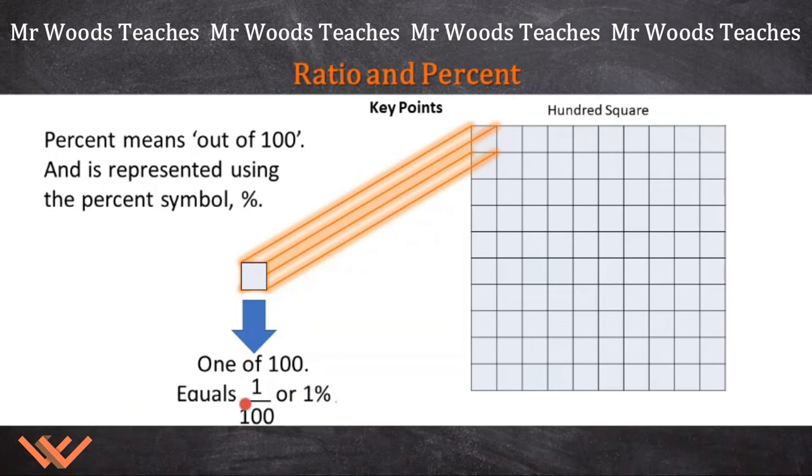1 of 100 equals this ratio here. This is a ratio: it's 1 over 100, or 1%. So if we had 8 of these, it would be 8 over 100 or 8%. 27 would be 27% or 27 over 100.